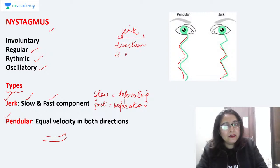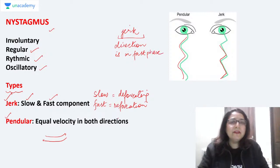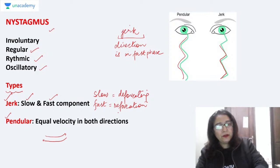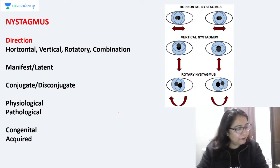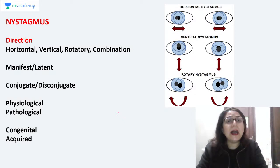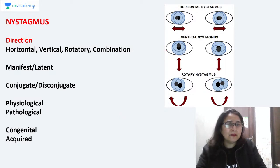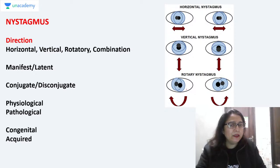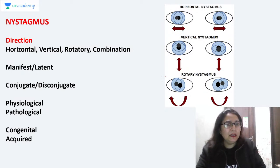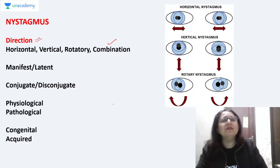When it is jerk-type nystagmus, the direction of nystagmus is guided by the fast phase. If the fast movement of the eye is towards the right, it will be right-sided nystagmus. We can also characterize nystagmus by the direction of eyeball movement: horizontal (right-left), vertical (up-down), rotatory (torsional), or a mix of these movements.